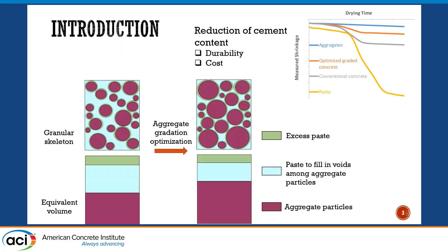Why do we need to reduce cement content? As concrete people, we talk a lot about cement. But cement is not actually a good thing. First, cement is more costly — any producer knows that — so reducing cement content gives a cost benefit. From a technical standpoint, a lot of cement introduces a high amount of shrinkage. If you can reduce the cement content, you can reduce shrinkage and make the concrete more durable.